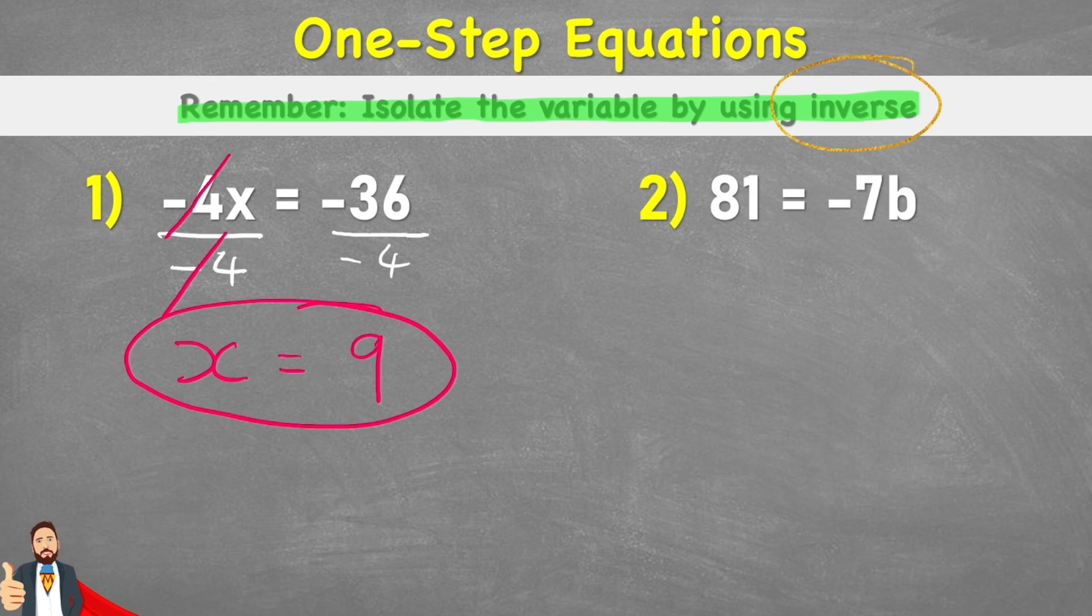Now I can double-check that by starting the equation again, but putting 9 instead of my x. Negative 4 times 9 equals negative 36. So let's now begin to solve. Negative 4 times 9 equals negative 36. Negative 36 obviously equals negative 36. Therefore, our equation and our answer works.